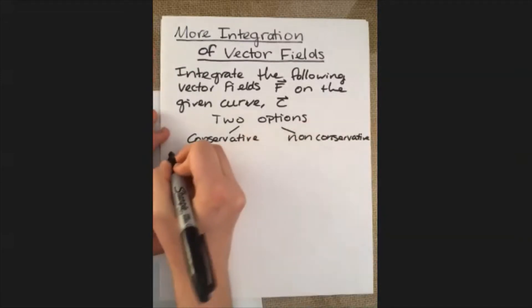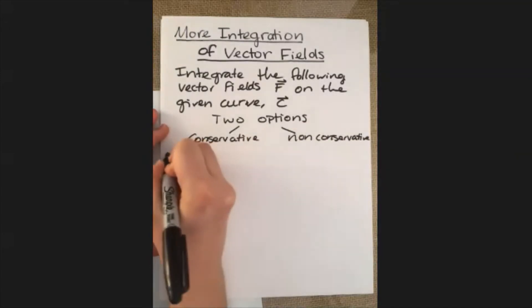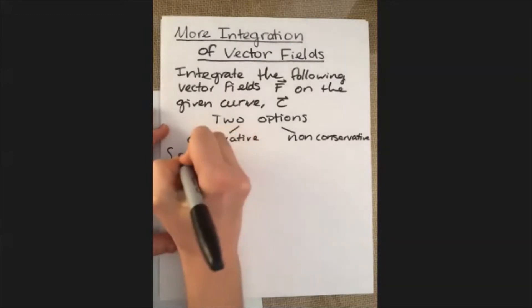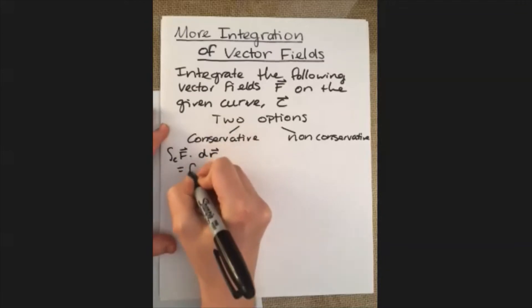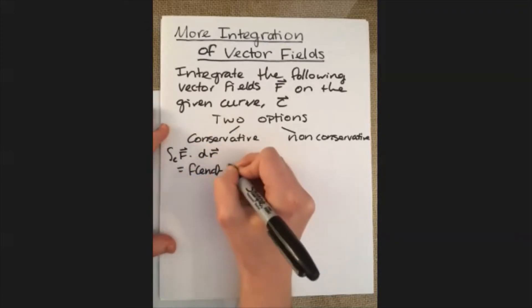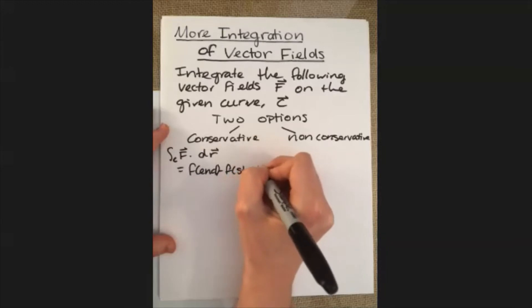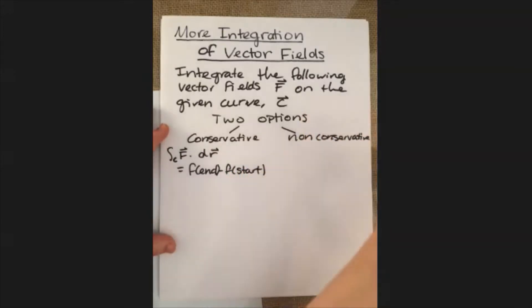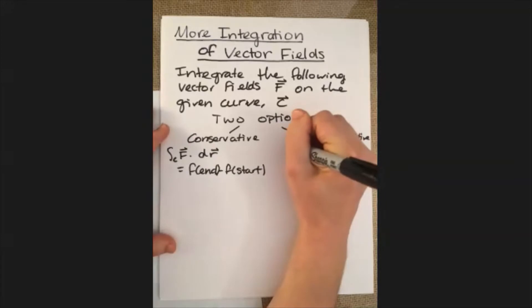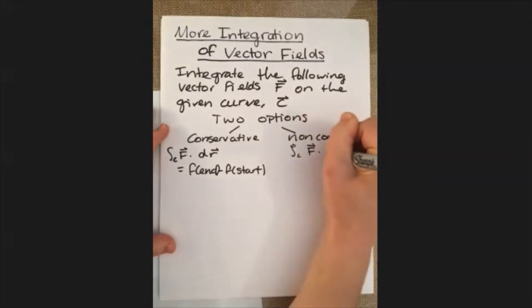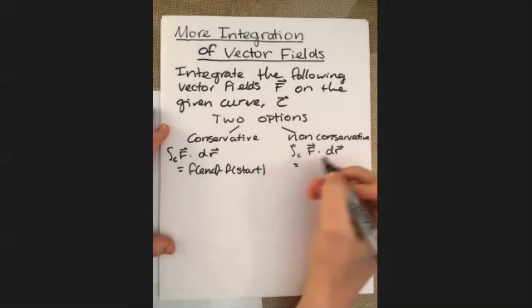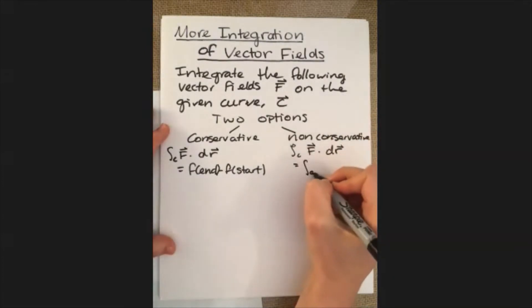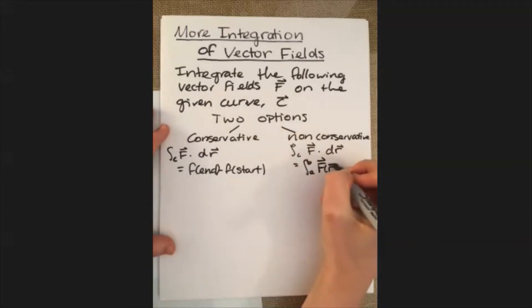In the case that it is conservative, we're going to want to use the strategy that the integral over the curve of F dot dr is equal to the potential function evaluated at the end point minus the potential function evaluated at the start point. Whereas in the non-conservative case, which is really the most basic method, what you do is parameterize your curve and use that to get a standard-looking integral by plugging that into the vector field.